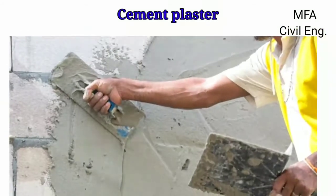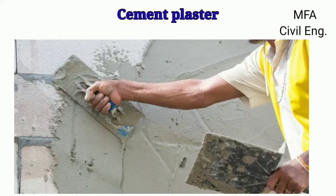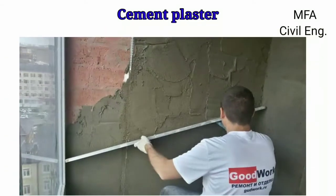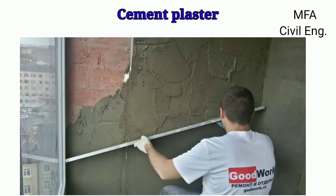For one coat plaster, cement plaster is applied on a prepared surface with the mason's trowel. After application, the cement plaster surface is leveled with the help of a wooden float and straight edge, and then the surface is finally polished with the trowel.